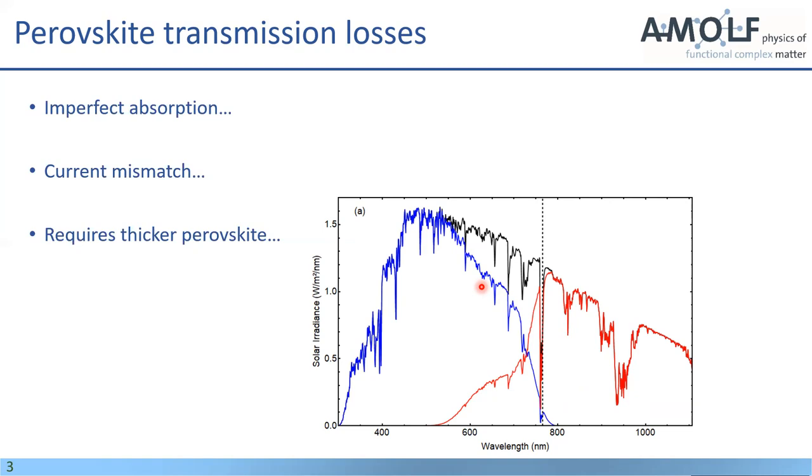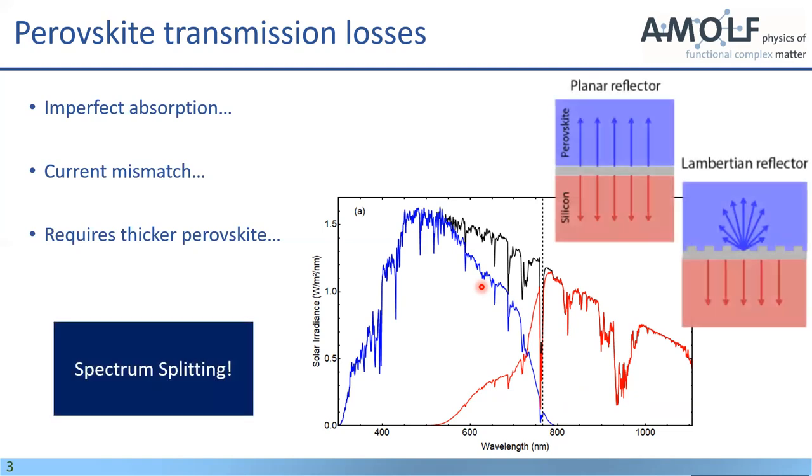So what we're suggesting is to introduce a spectrum splitting layer at the interface between the perovskite and the silicon solar cell to have light bounce back when it's above the band gap and be transmitted when its wavelength is below the band gap. And you can do this in two different fashions, in a planar or Lambertian fashion, which I'll talk about later.